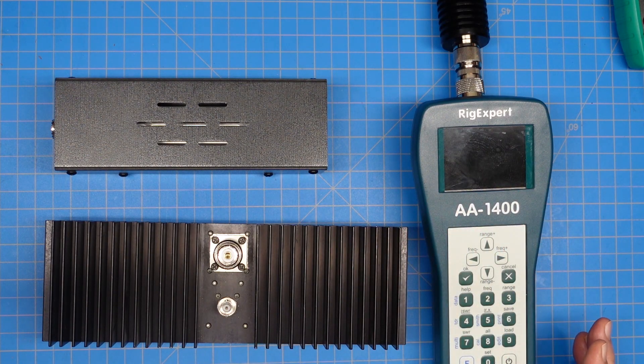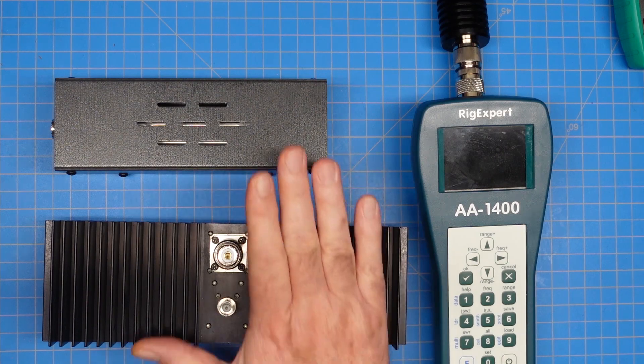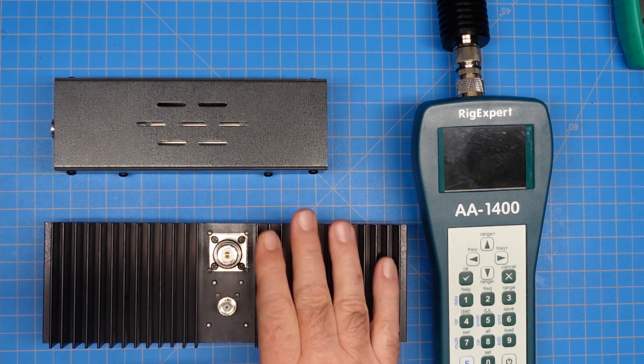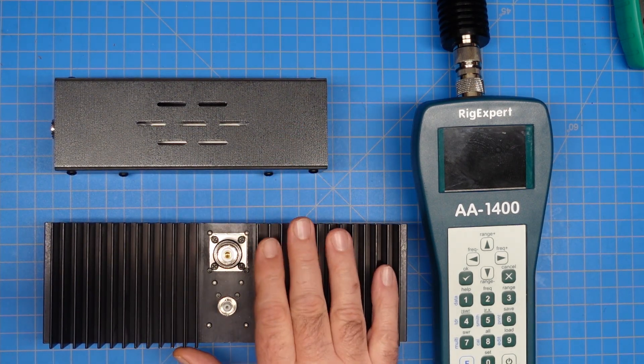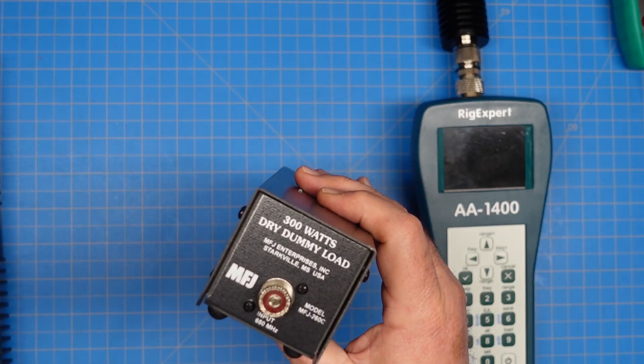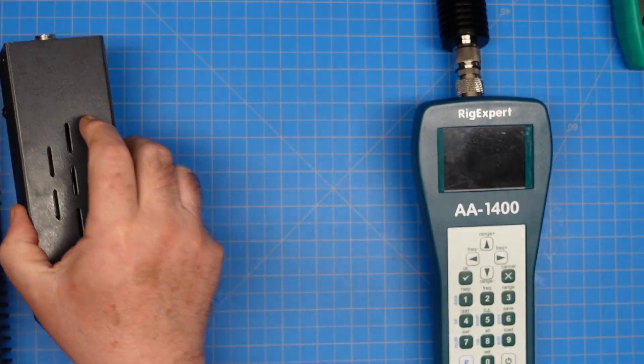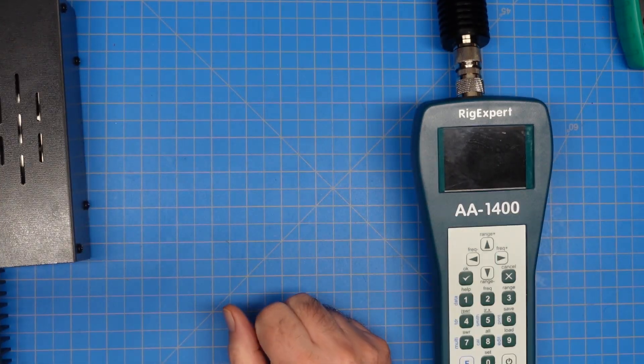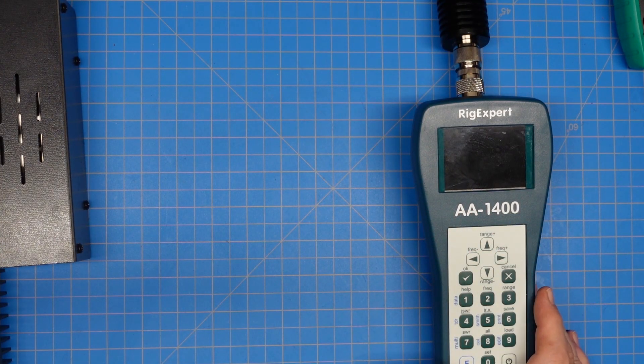I want to do a very quick follow-up video to my last video where I tested dummy loads. These two, we liked them. This is the Cellwave dummy load, the DL200. This is the MFJ-260C, 300-watt dummy load, and those gave us outstanding test results across a wide range of frequency bands.